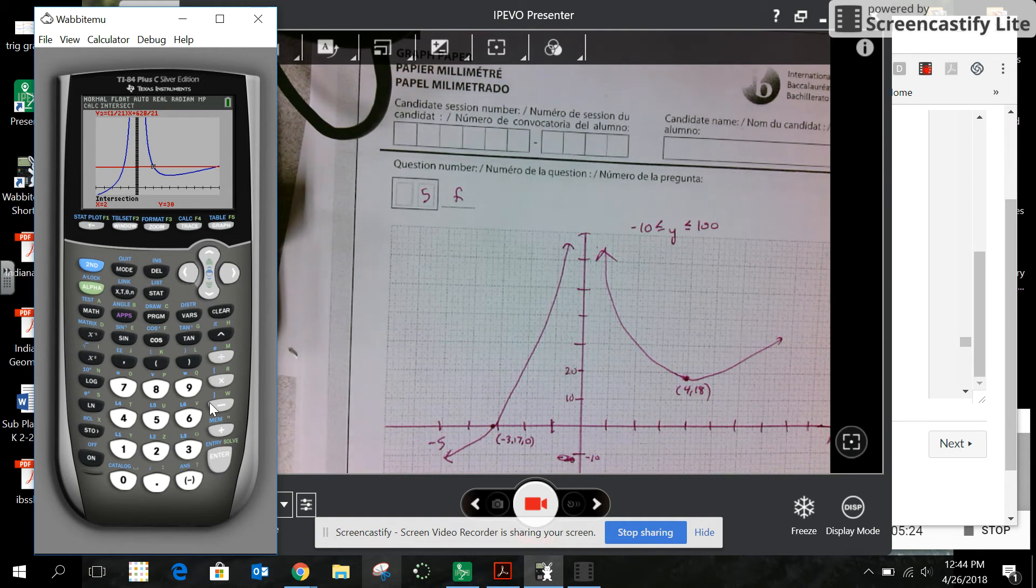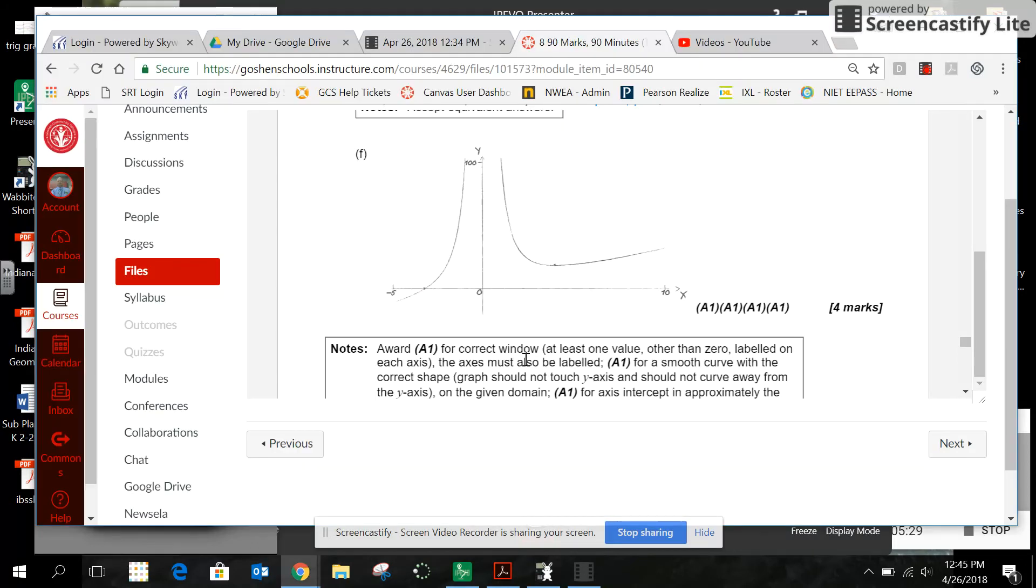So if you look at the mark scheme for the graph, one point for the correct window, label one value on each axis. I did more than that. One point for a smooth curve. Graph should not touch the y-axis. Did that. And one point for the axis intercept in approximately the right place.